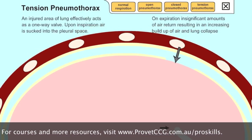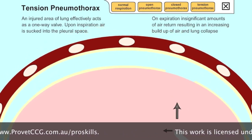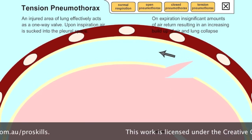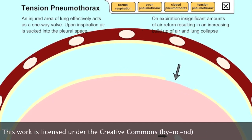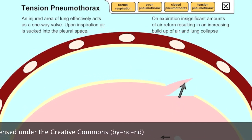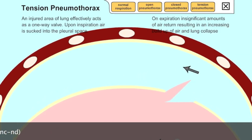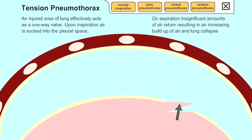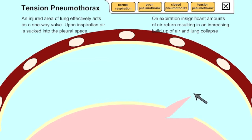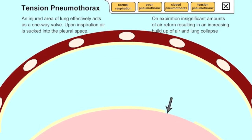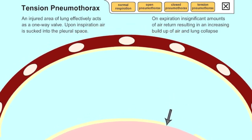The tension pneumothorax is one of the most life-threatening pneumothorax categories. An injured area of lung is effectively acting as a one-way valve. When the animal breathes in, air is sucked into the pleural space, and when the animal breathes out, only insignificant tiny amounts of air return. This results in an increasing build-up of air between the lung and the pleura, and the lung will eventually collapse.